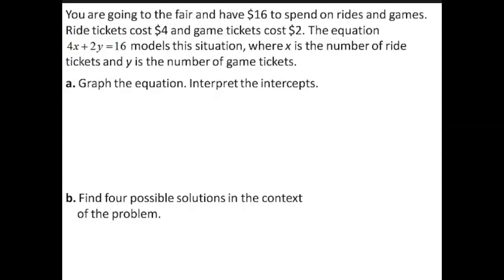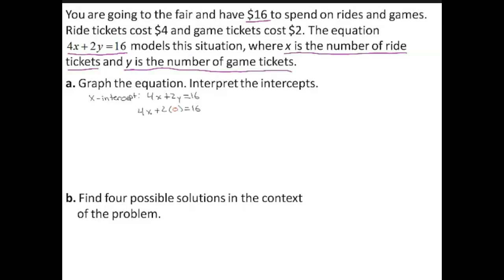You are going to the fair and have $16 to spend on rides and games. Ride tickets cost $4 and game tickets cost $2. The equation 4x plus 2y equals 16 models this situation, where x is the number of ride tickets and y is the number of game tickets. Part A: Graph the equation and interpret the intercepts. To find the x-intercept, substitute 0 for y and solve for x. Substituting 0 for y gives 4x plus 2 times 0 equals 16, which simplifies to x equals 4.